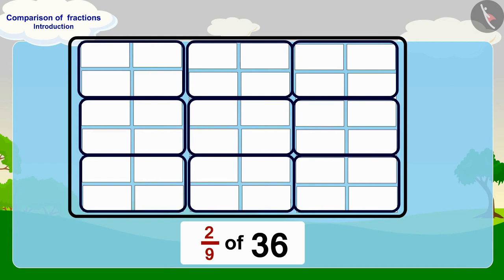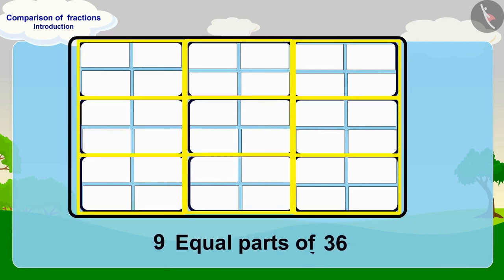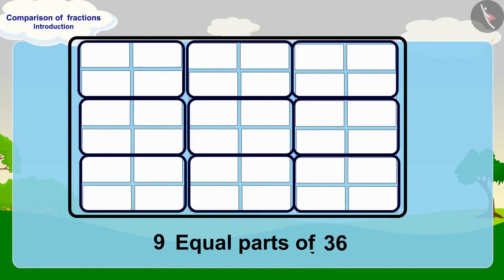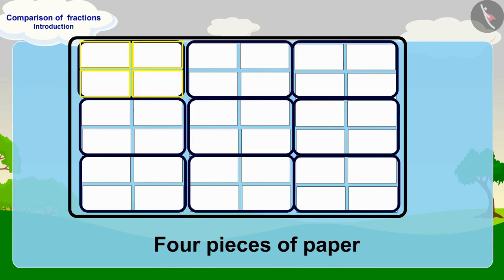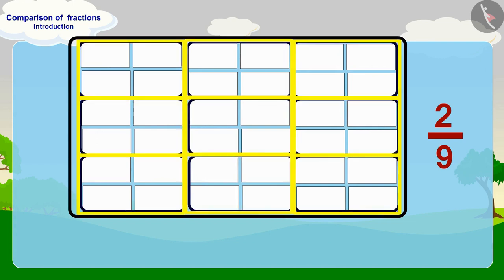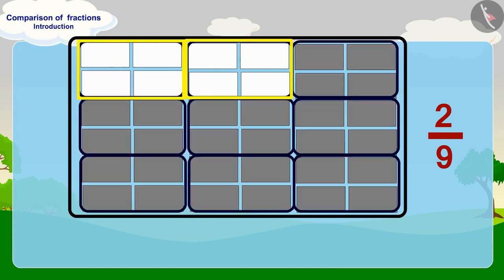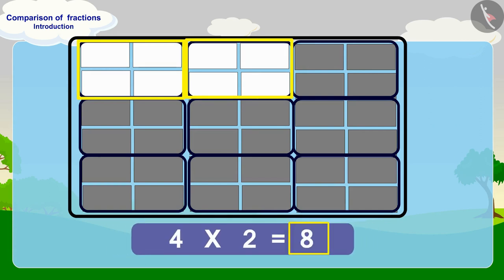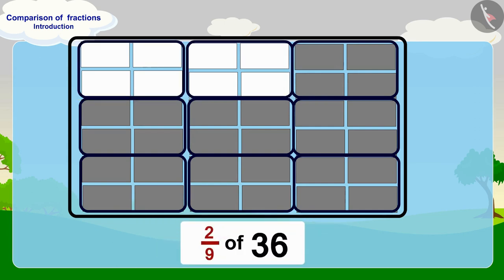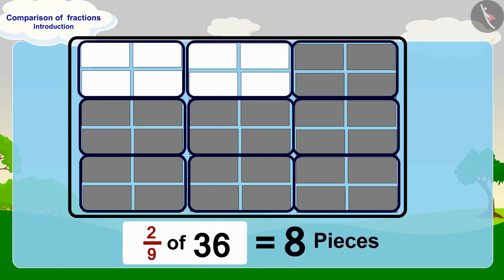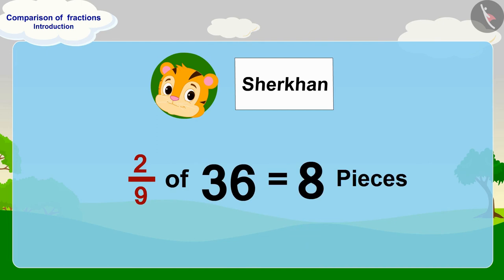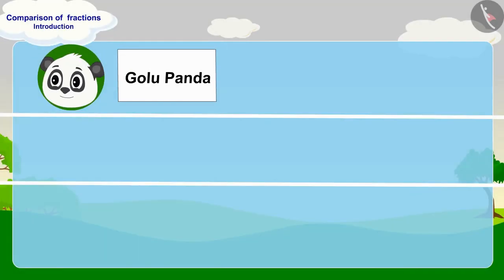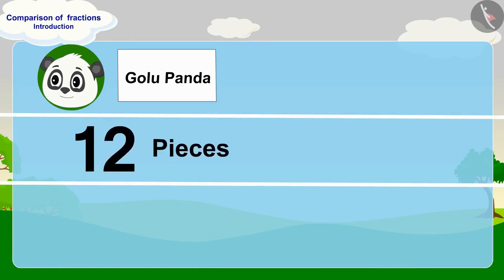Well done, children — you have solved it perfectly. For two-ninth of 36, we will divide 36 into nine equal parts. In this way, each part will have four pieces of paper. In two-ninth, we are taking two of these nine equal parts. There are four pieces of paper in one part of this fraction, so how many pieces will there be in two parts? 2 multiplied by 4 equals 8 pieces of paper. So two-ninth of 36 is 8 pieces of paper. Share Khan has written his name on a total of 8 pieces of paper.